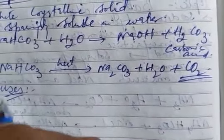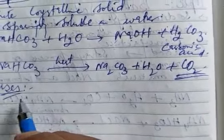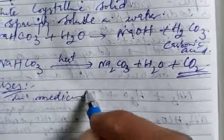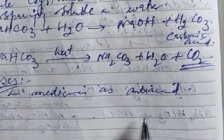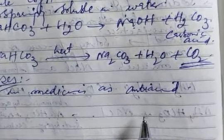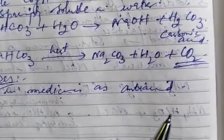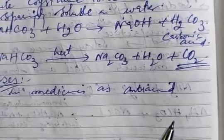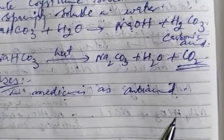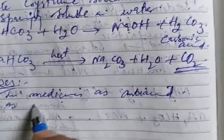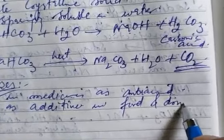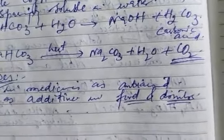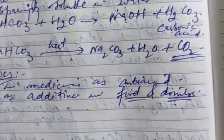Now the uses of baking soda. First, it is used in medicines as an antacid — when acidity is too high, antacid tablets containing sodium hydrogen carbonate neutralize the acid because it acts as a base. Second, it is used as an additive in foods and drinks, including soft drinks.